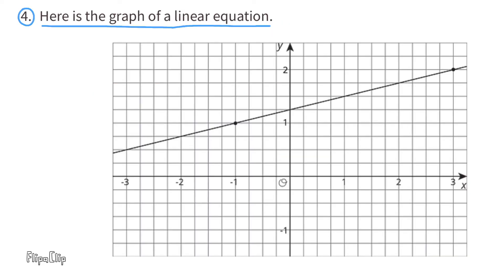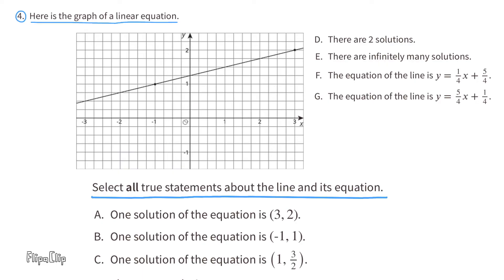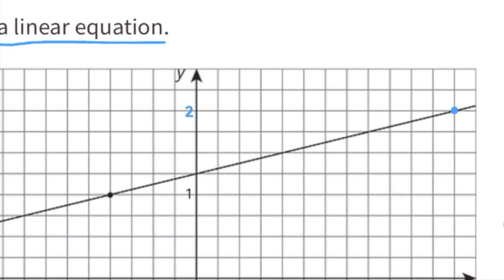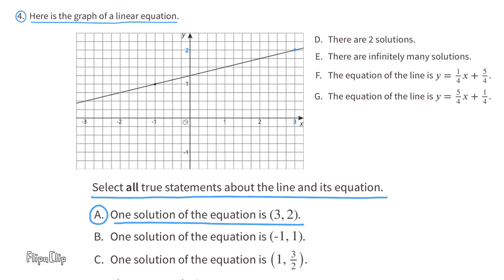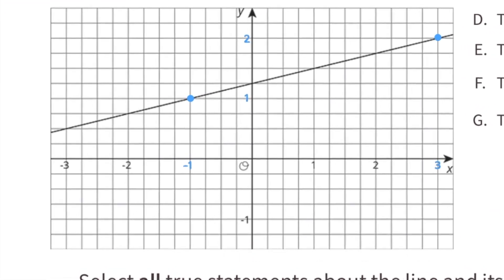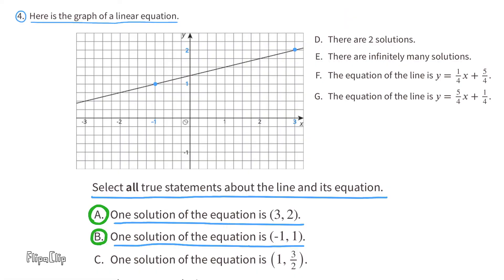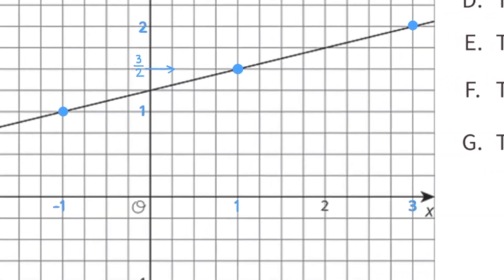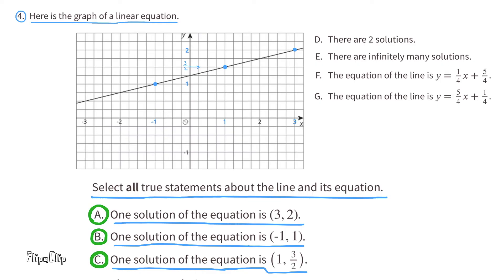Number 4. Here is the graph of a linear equation. Select all true statements about the line and its equation. Statement A: one solution is the ordered pair (3, 2). I plotted that point and it lands on the line, so statement A is true. Statement B: one solution is ordered pair (negative 1, 1). This point also lands on the line, so statement B is true. Statement C: one solution is ordered pair (1, 3/2). This point also lands on the line, so statement C is true.